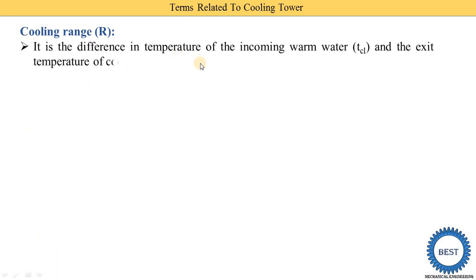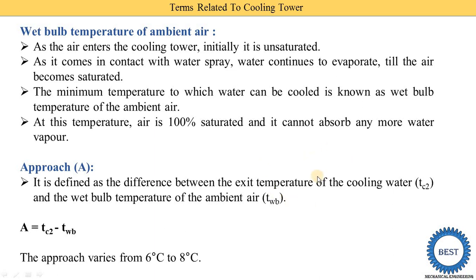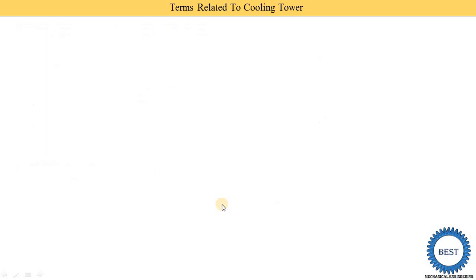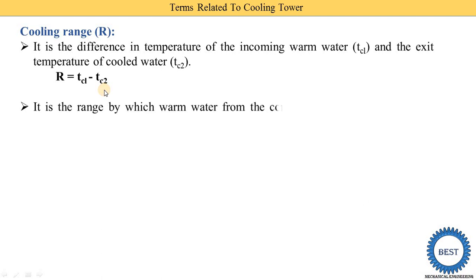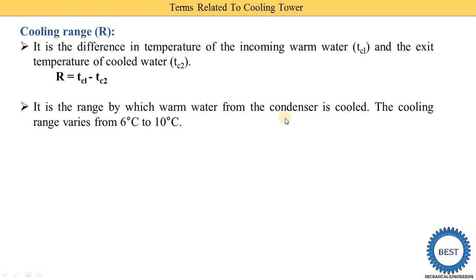The third point is the cooling range, denoted by capital R. It is the difference in temperature of the incoming warm water and the exit temperature of the cool water. R = TC1 − TC2, meaning it is the temperature difference of the water. In the cooling tower, we reduce the temperature of water using air. The incoming warm water has temperature TC1, and after cooling it becomes TC2. So TC1 − TC2 is called the cooling range R — the range by which warm water from the condenser is cooled.